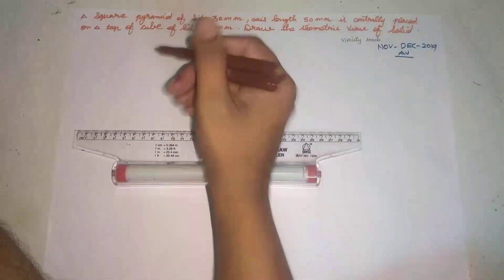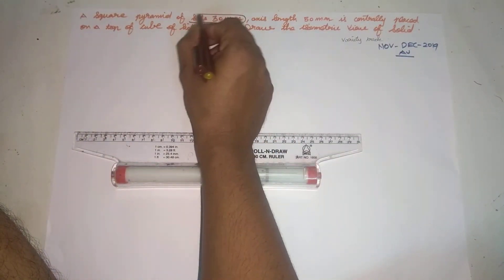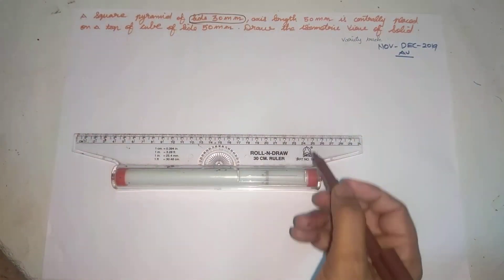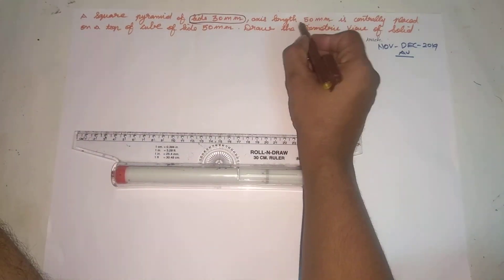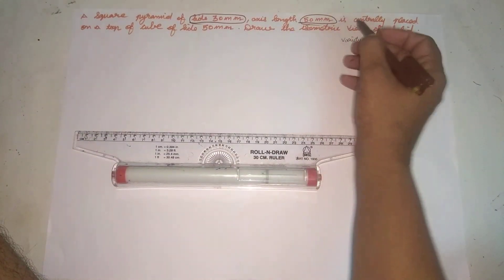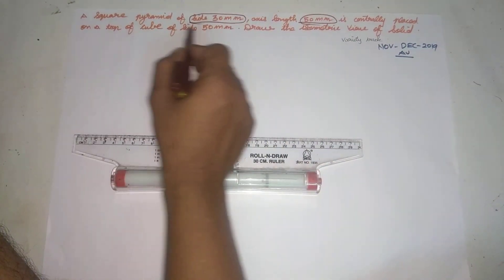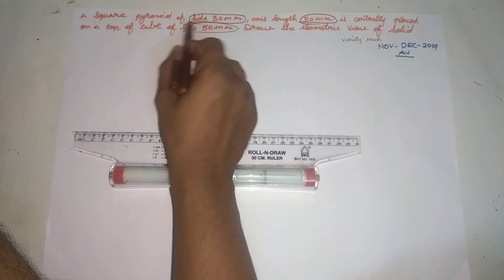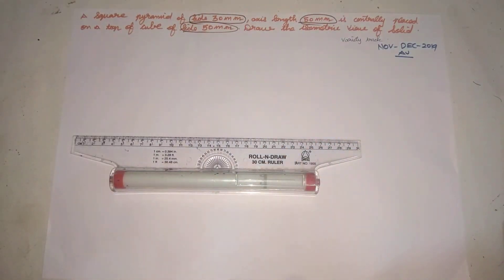Square pyramid — half side. Square pyramid side is 30mm and length is 50mm, and center placed on top of a cube, half side, other side 50mm.